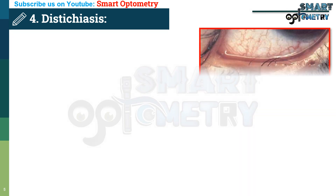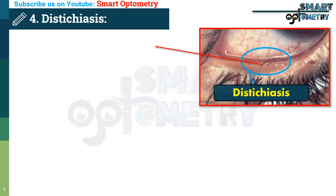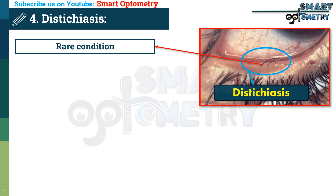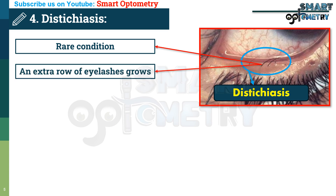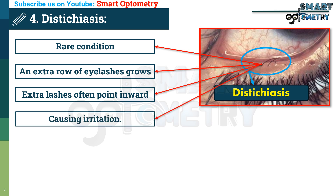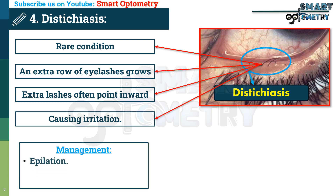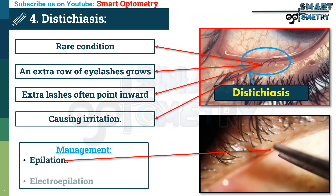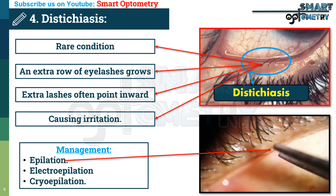Now, dystichiasis. Dystichiasis is a rare condition where an extra row of eyelashes grows where the meibomian gland should be. These extra lashes often point inward, rubbing against the cornea and causing irritation. Treatment involves epilation, electroepilation, or cryoepilation to remove these lashes and prevent further discomfort.